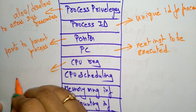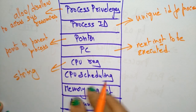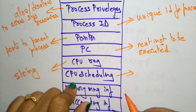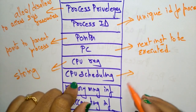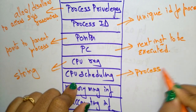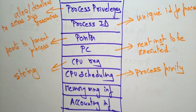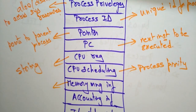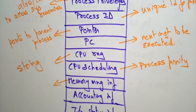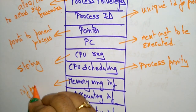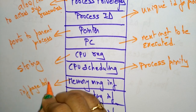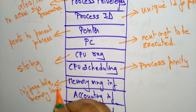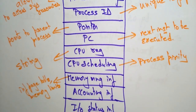CPU registers are used for storing data temporarily during execution. CPU scheduling decides the process priority — the process priority will be stored in CPU scheduling. Memory management information includes information of page tables and memory limits, specifying how much memory is to be used.